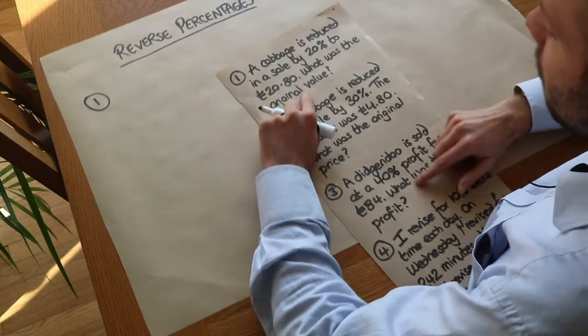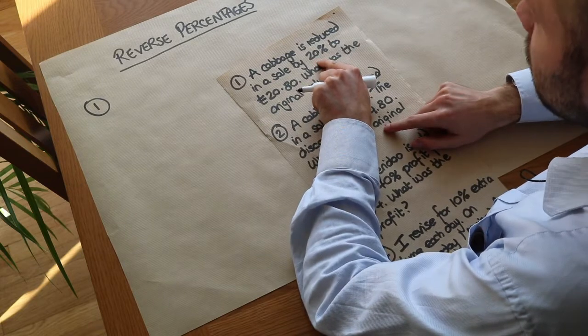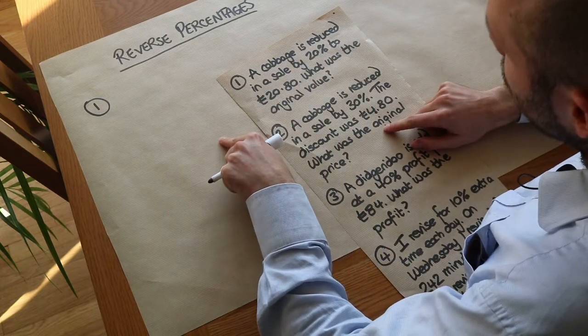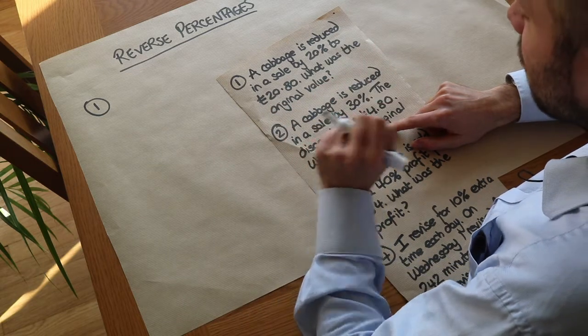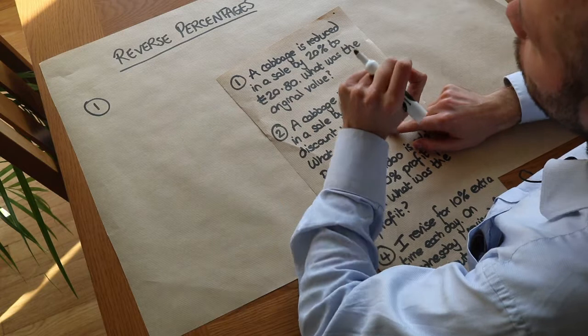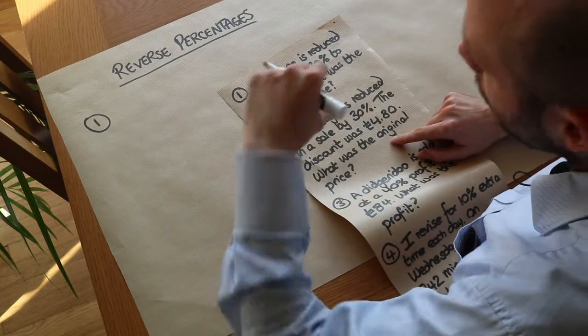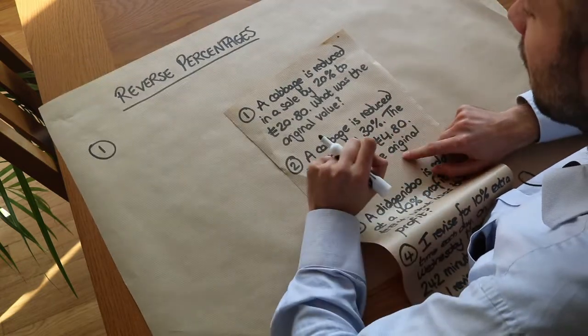Now you might be tempted to think, well if it reduced by 20%, so it's 20% less, we could find the original amount by just adding 20% back on. The problem is, is that when you add 20% back on, you're finding 20% of the reduced amount, not of the original amount.